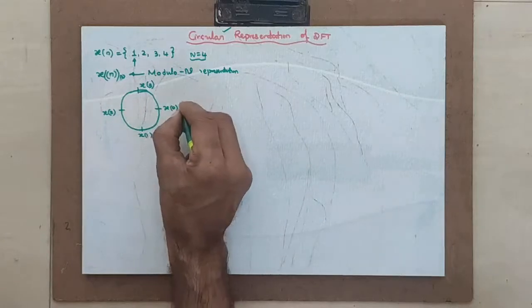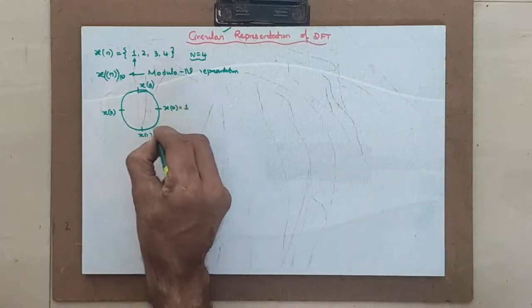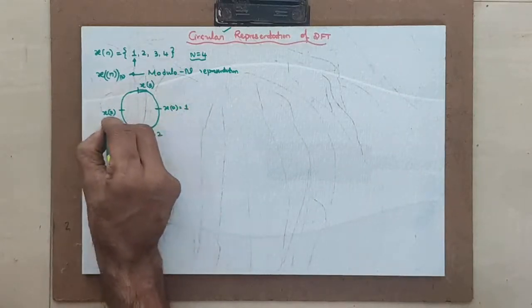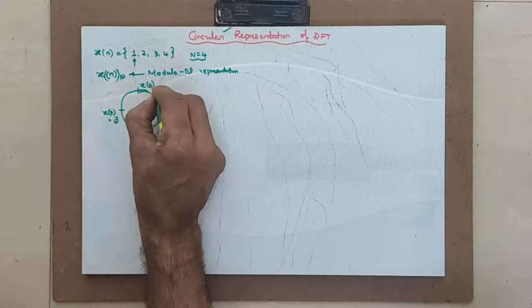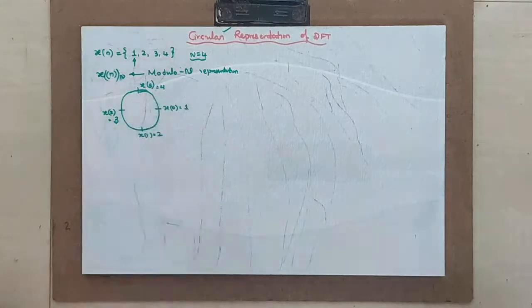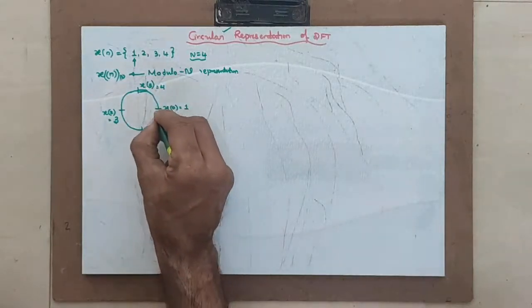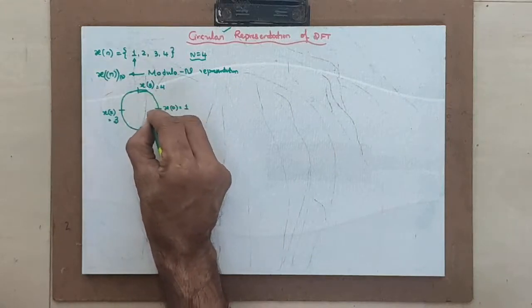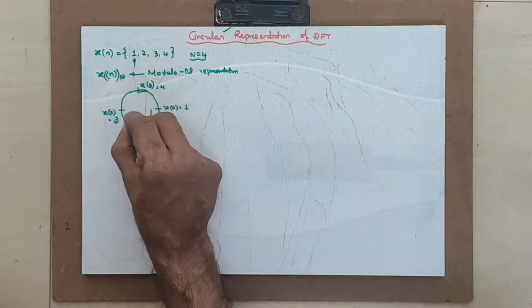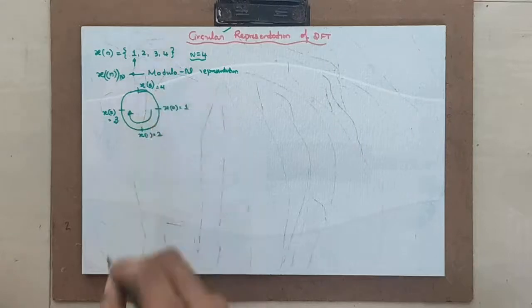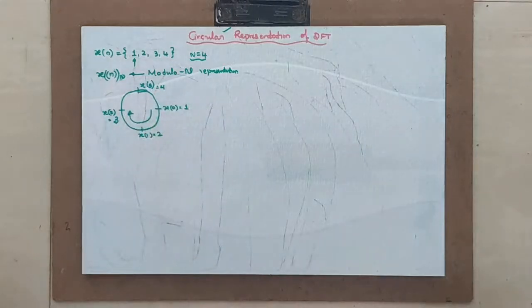x naught, x1, x2, x3. That means 1, 2, 3 and 4. This is the representation. I have just put the signal around a circle in the clockwise direction. Reading also in the same way.